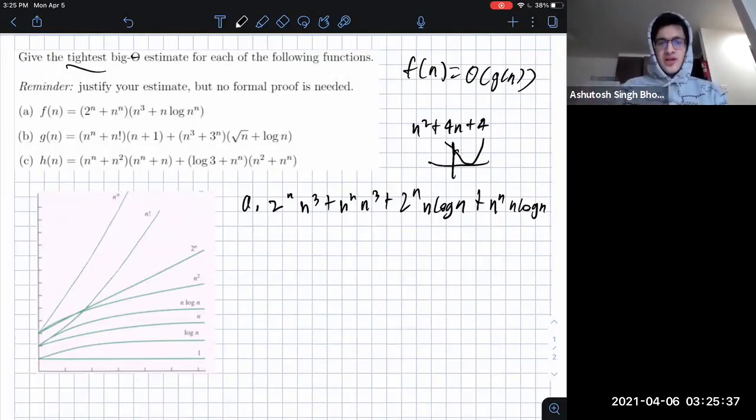And in big O, we really only care about end behavior, and same with really big omega and big theta, because that tells us what the function is going to behave like in the really long term as you basically go to infinity in terms of runtime.